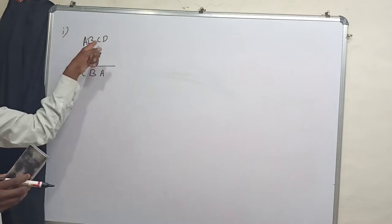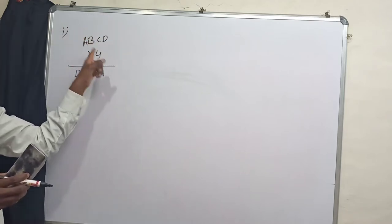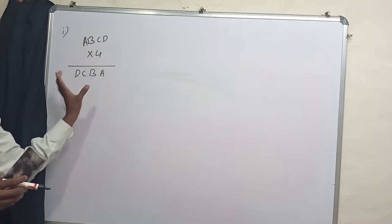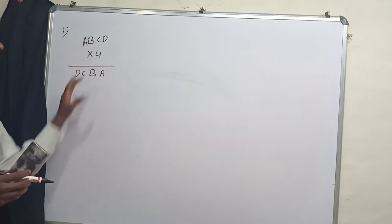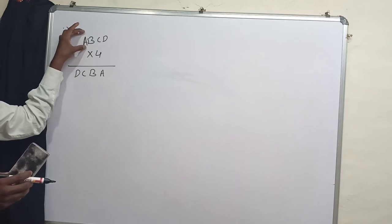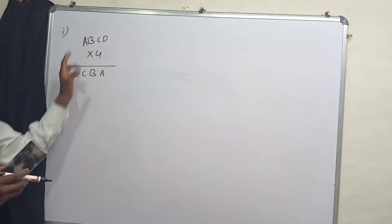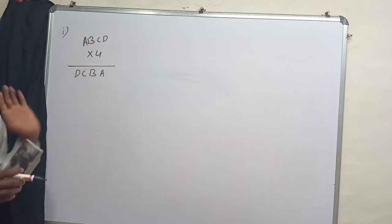Since ABCD is a four digit number, by multiplying that four digit number with 4, we will get one more four digit number and we need to find the numbers which are represented by these alphabets A, B, C and D.